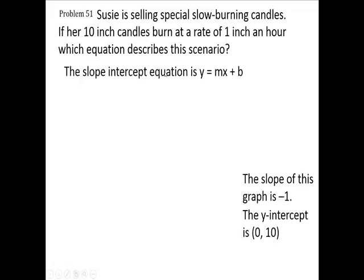We have our slope-intercept form as y = mx + b. So in place of m, since we have a slope of minus one, I'm going to put a minus one in there for the m. And b is ten.